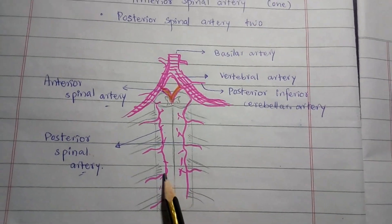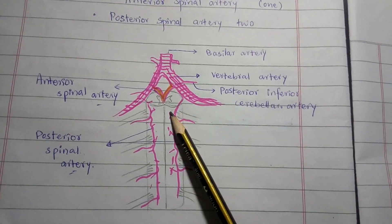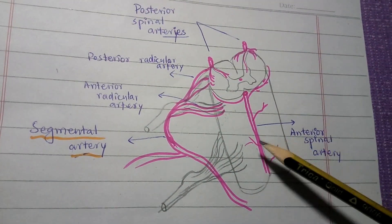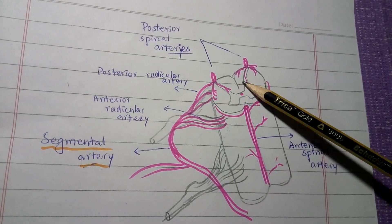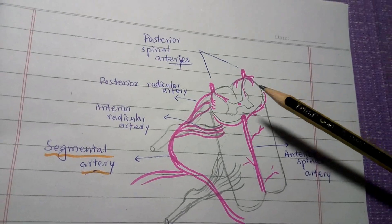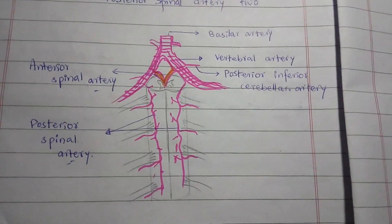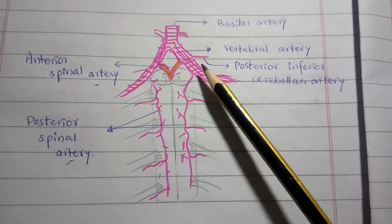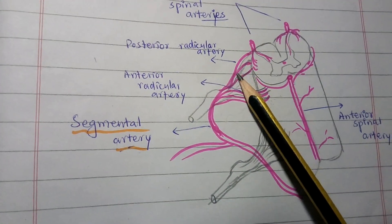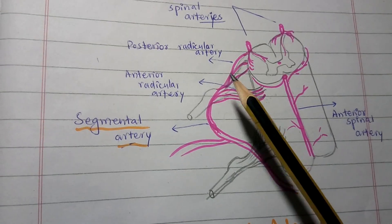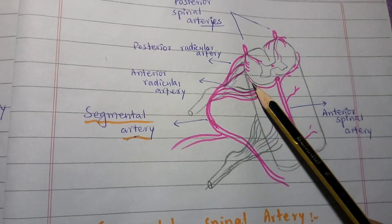The posterior spinal arteries run over the spinal cord surface close to the roots of the spinal nerves. They are given off directly from the vertebral artery, or indirectly by the posterior inferior cerebellar artery. The posterior spinal arteries give their branches close to the dorsal roots of the spinal nerve, and supply almost the posterior one-third of the spinal cord.